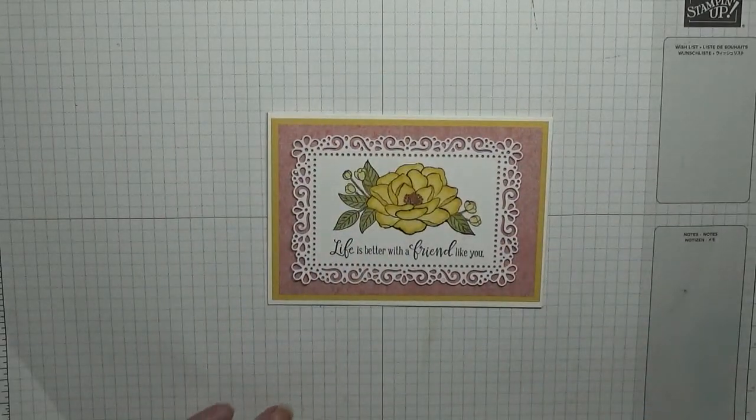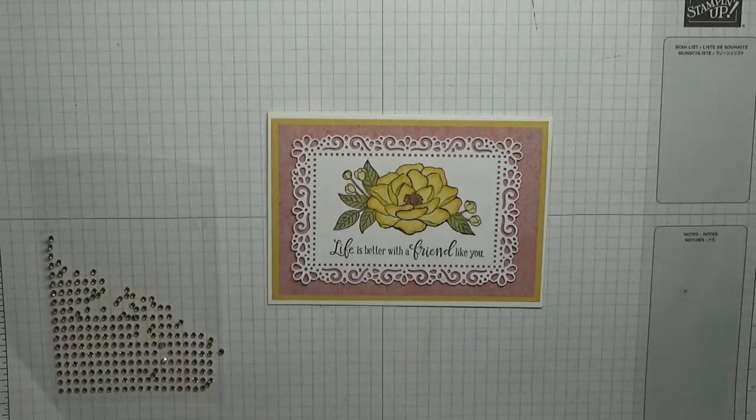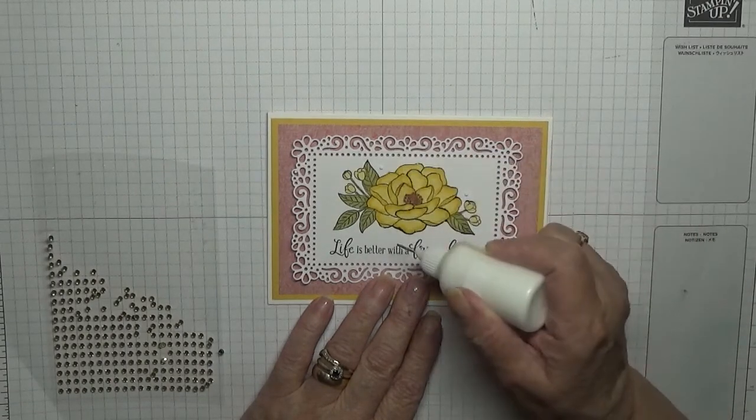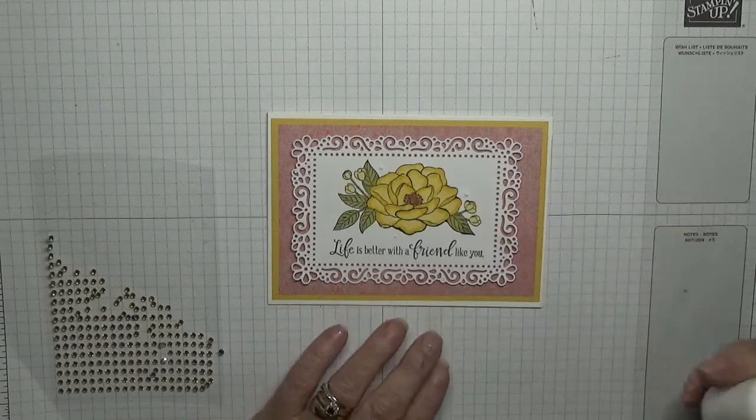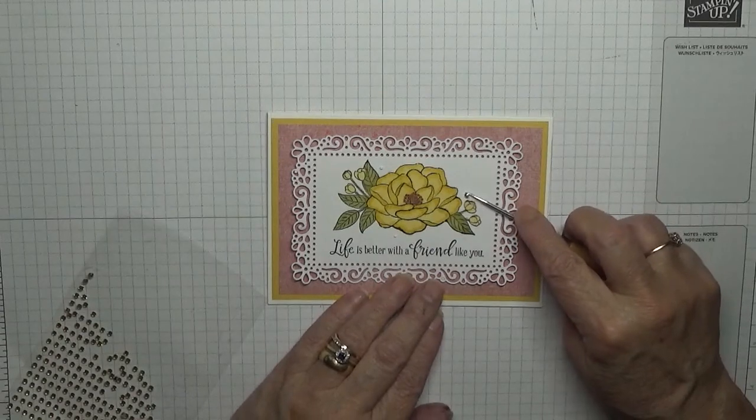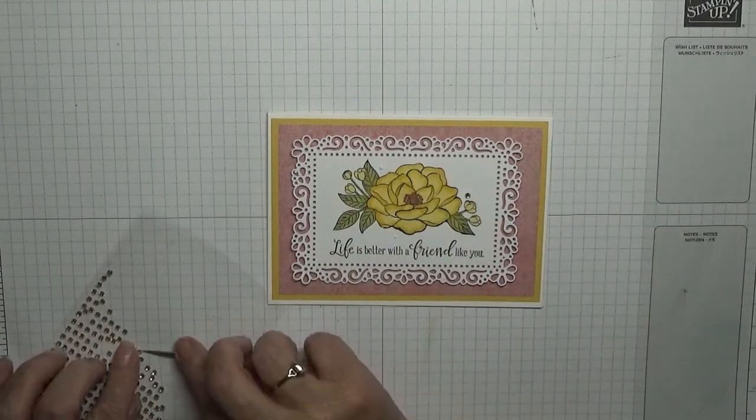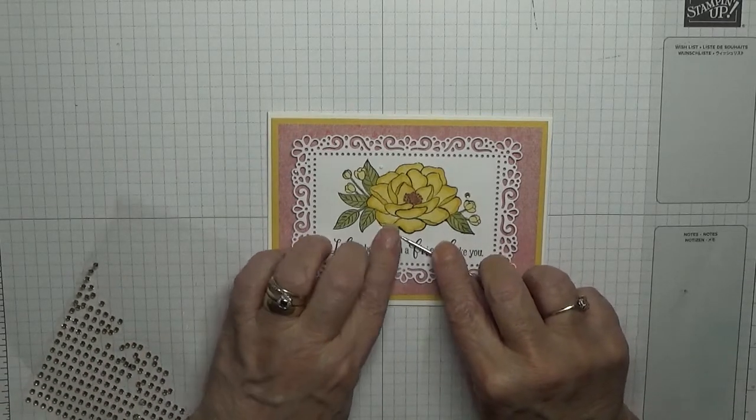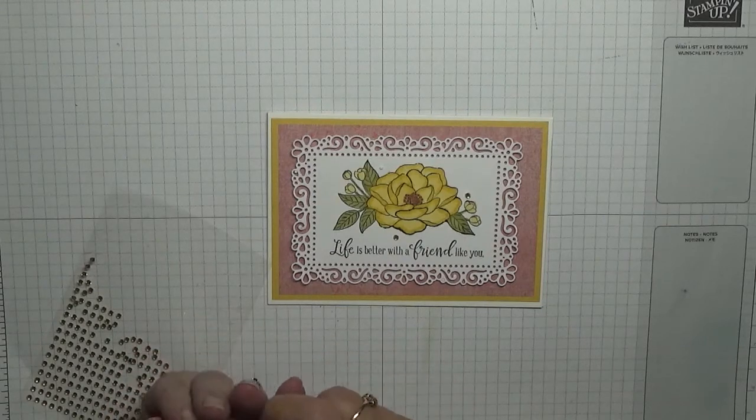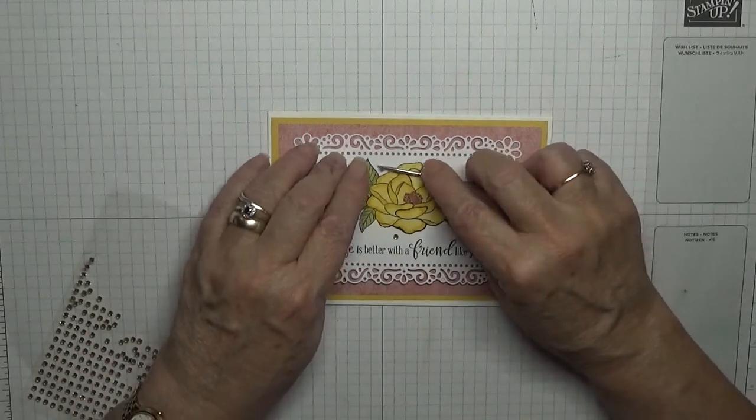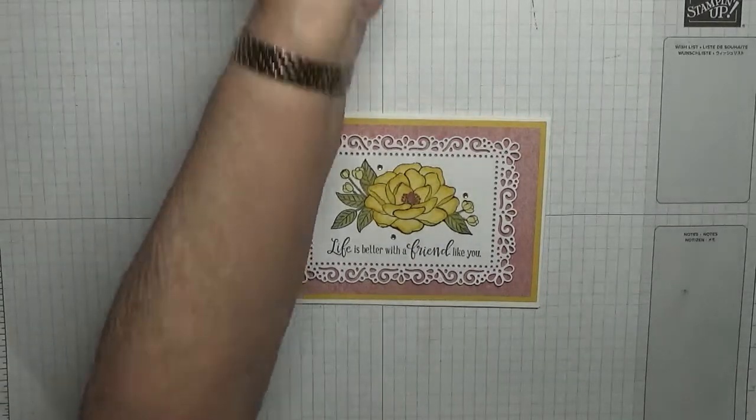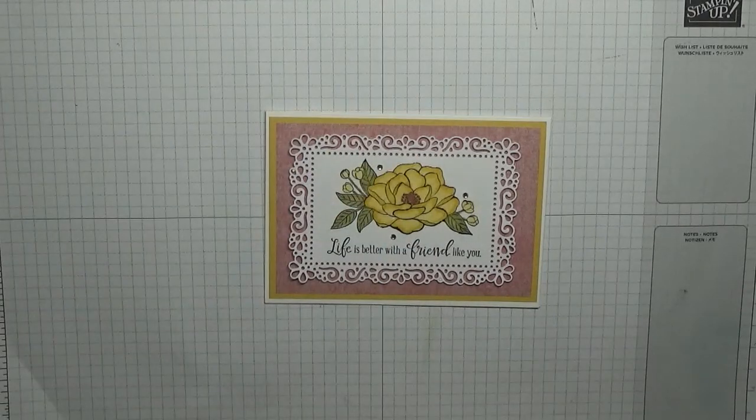And now we just have to add some gold gems. I'm going to put one there, one there, and I can actually get one down there. On the other one I couldn't. One, two, put one on my thumb, three.